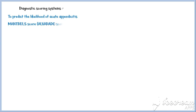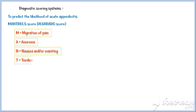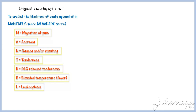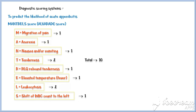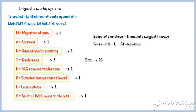Several investigators have created diagnostic scoring systems to predict the likelihood of acute appendicitis. A finite number of clinical variables is elicited from the patient, each given a numeric value, and the sum is used. The best known is the MANTRELS score, also known as the Alvarado score. M stands for migration of pain, A for anorexia, N for nausea and vomiting, T for tenderness, R for rebound tenderness in the right lower quadrant, E for elevated temperature, L for leukocytosis, and S for shift of the white blood cell count to the left, meaning more premature white blood cells. Tenderness and leukocytosis are given 2 points each, and all others are given 1 point each. Patients with a score of 7 or above should receive immediate surgical therapy, and patients with a score of 4 to 6 should undergo CT evaluation for appendicitis.